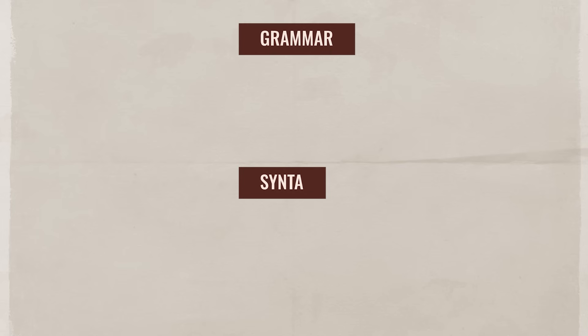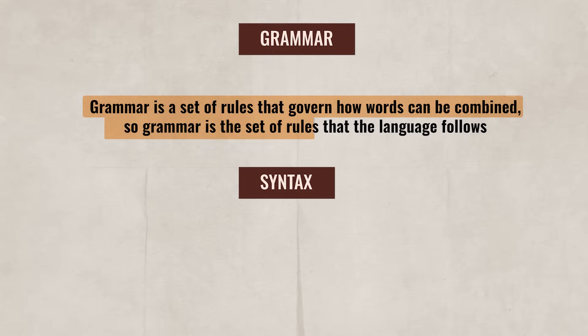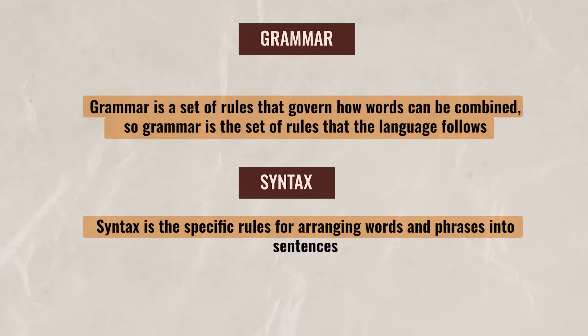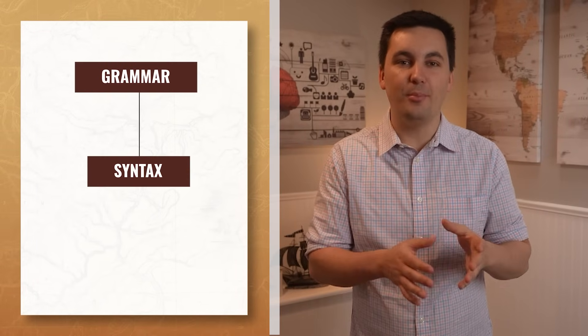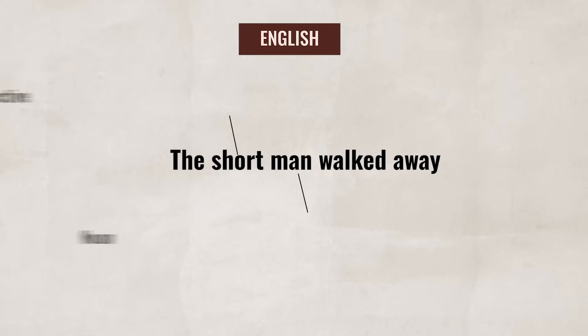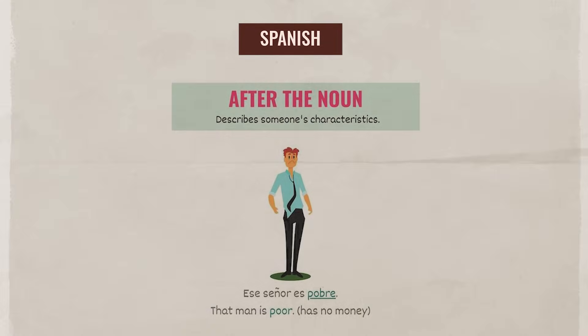Lastly, we have grammar and syntax. Grammar is a set of rules that govern how words can be combined — so grammar is the set of rules that the language follows. Syntax, on the other hand, is the specific rules for arranging words and phrases into sentences, and it allows people to figure out who did what to whom. Think of grammar as the overall system of rules for a language, and think of syntax as a subcategory of grammar specifically dealing with sentence structure. For example, in English, syntax tells people to put adjectives before nouns, but in Spanish, syntax tells people to put adjectives after nouns.